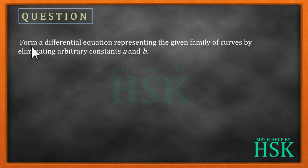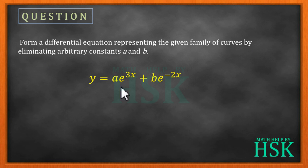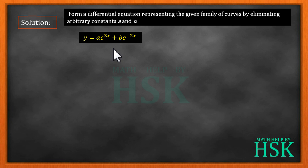The question is: form a differential equation representing the given family of curves by eliminating the arbitrary constants a and b. The curve given is y = a·e^(3x) + b·e^(-2x). This equation contains two arbitrary constants a and b, so as a rule we will have to differentiate this equation two times to form the required differential equation.